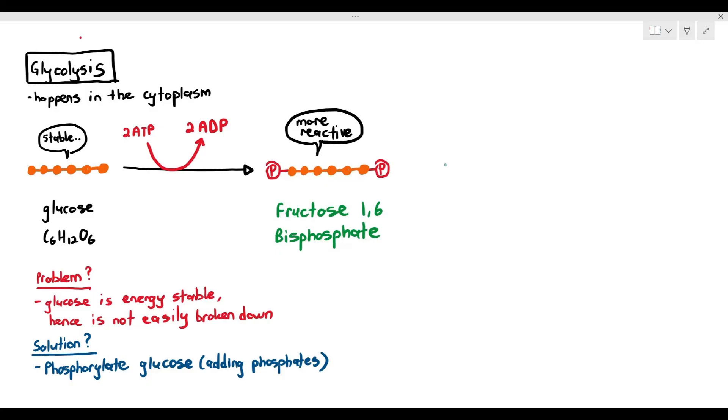It's a mouthful to mention the name of this molecule. Once it becomes fructose 1,6-bisphosphate, this is good because it's more reactive. It's easier for the next reaction to happen. Based on my diagram here, tell me what happens to the fructose 1,6-bisphosphate.